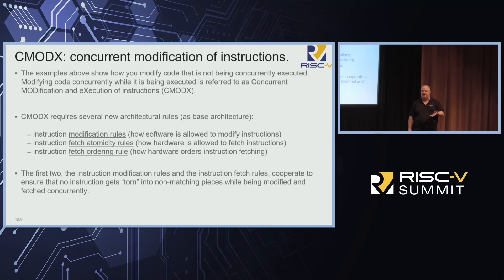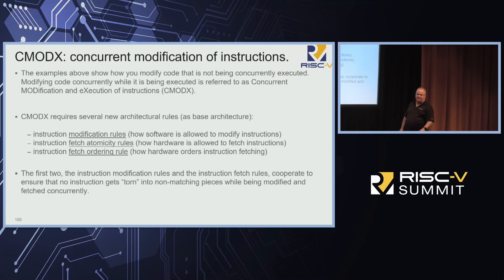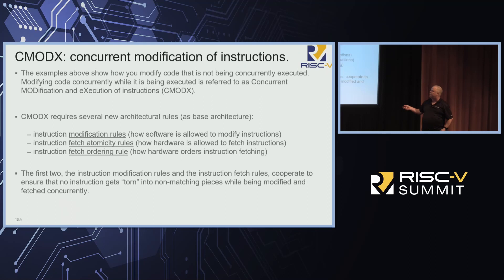So it turns out you're going to need a whole set of rules for how that works. First is the instruction modification rule: a set of rules that tells software what stores it can do at what alignment to modify instructions that might be concurrently executed. The next is the instruction fetch atomicity rule: how much and how atomic the fetches from the core have to be in your I-fetch unit. These two rules together are designed to keep you from tearing an instruction in half and winding up with half the old instruction and half the new — which is a bad day.